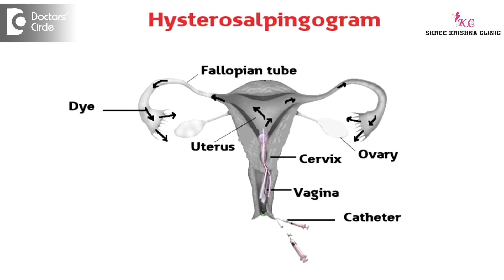How do we go about investigating secondary infertility? We do one baseline scan to see the uterus and the ovaries. Tubal patency has to be checked either by an X-ray procedure called hysterosalpingogram or by laparoscopic chromotubation, depending upon the individual case scenario. Tubes cannot be visualized on ultrasound, so these are the two key things we have to consider in secondary infertility.